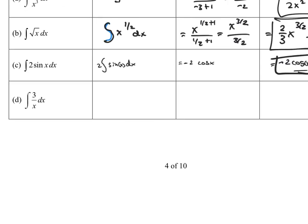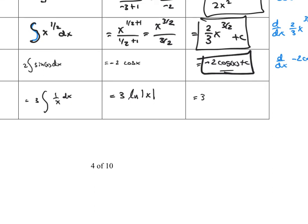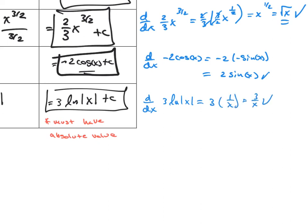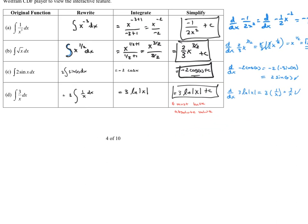How about the antiderivative of 3 over x? That's the same as 3 times the antiderivative of 1/x — pull out the constant multiple. We know that equals 3 times the natural log of the absolute value of x. You absolutely need the absolute value there. So the answer is 3 ln|x| plus C. If you don't put the absolute value, I have to take off credit. The derivative of 3 ln|x| is 3 times 1/x, which equals 3/x — exactly the original problem.